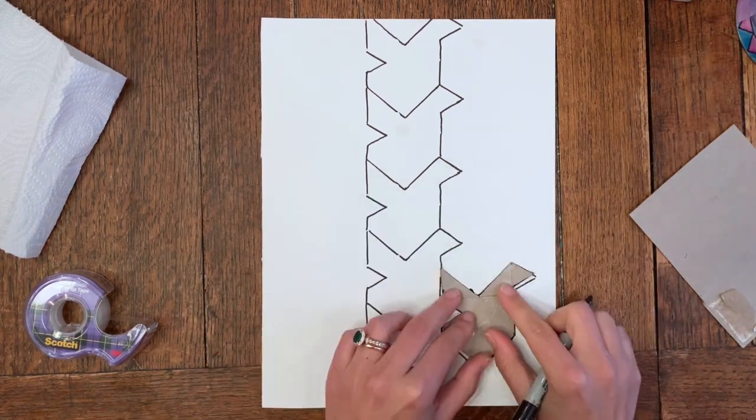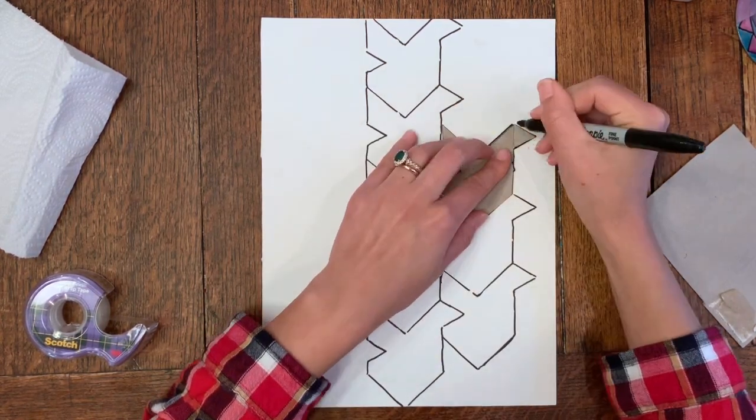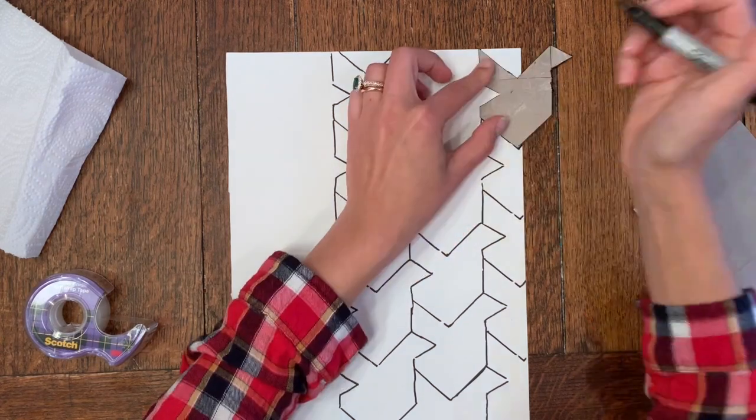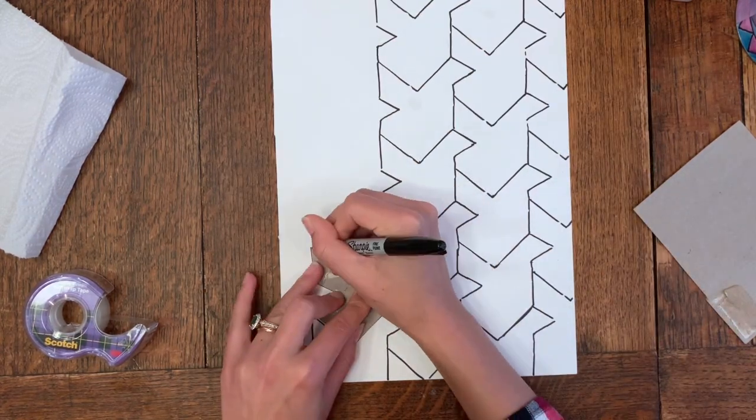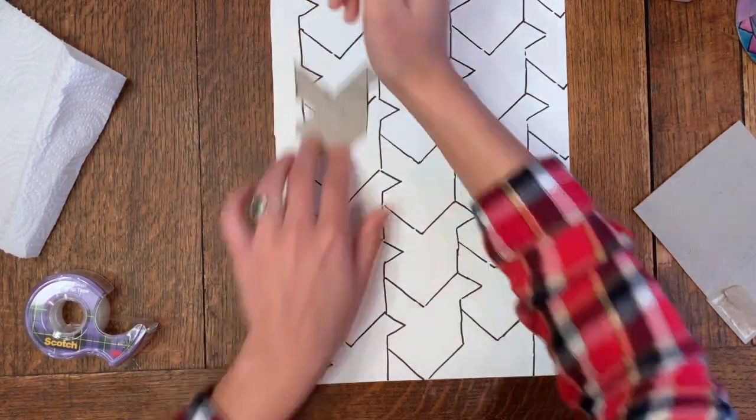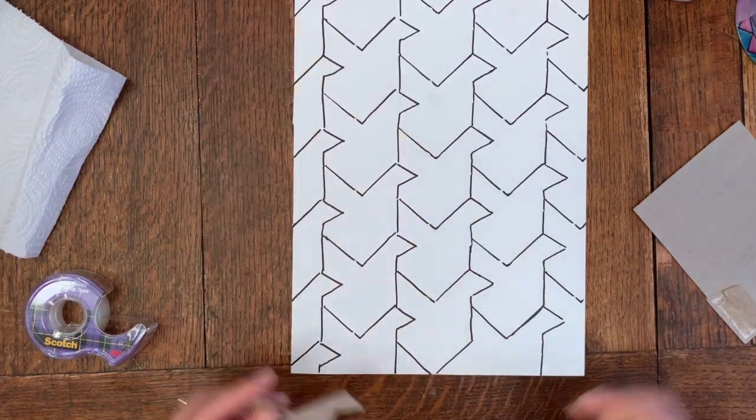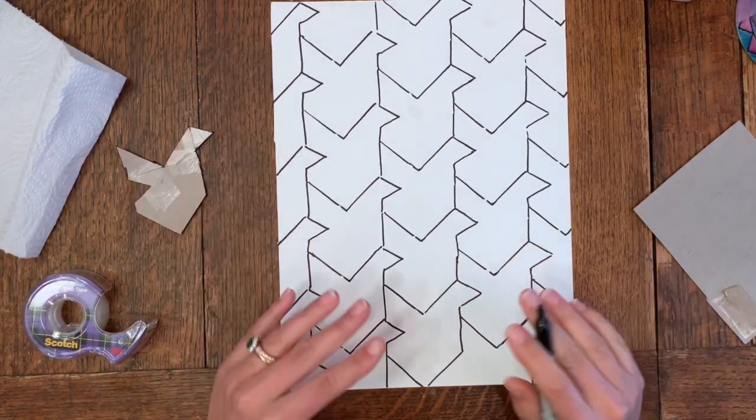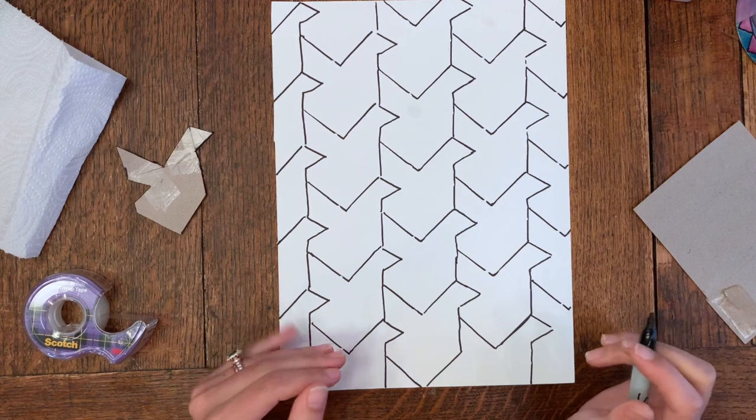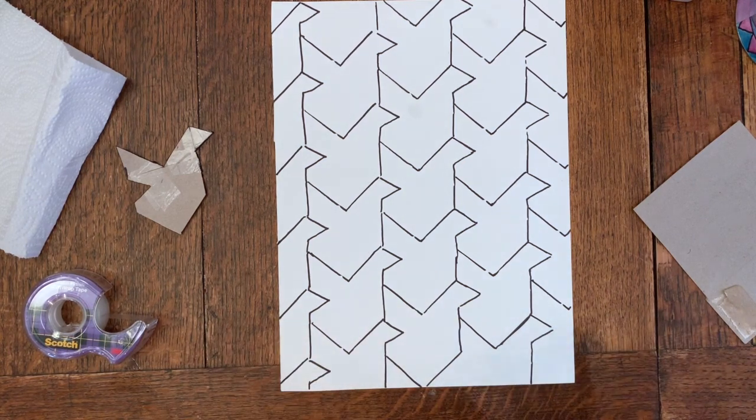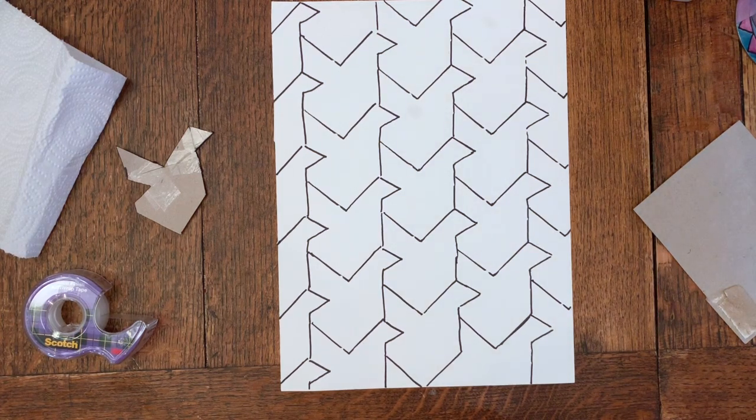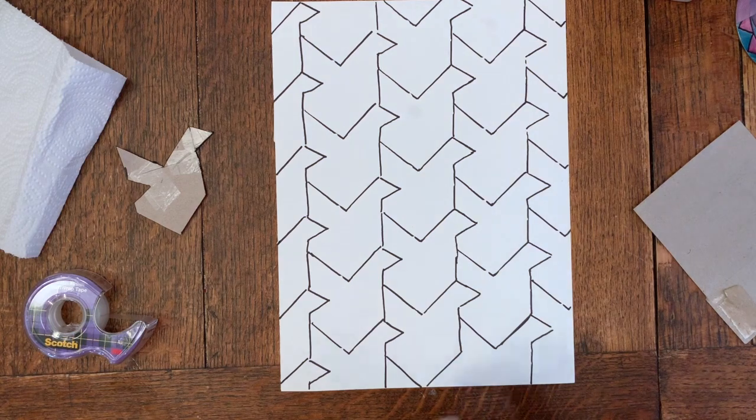Now that you've traced your tessellation to cover your whole paper, I want you to go back and add some details to your birds. For me, I'm going to add some eyes and beak and wing details.